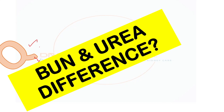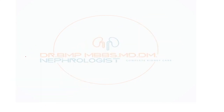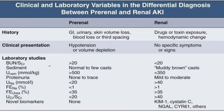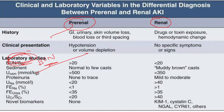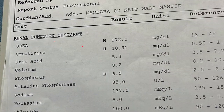This video is about the difference between BUN and urea. There was an intern preparing for the PG entrance examination who studied the previous day about pre-renal and renal AKI, where he saw some points given regarding the values related to BUN — blood urea nitrogen. The next day he came to the ward and saw a patient report which mentioned urea, not BUN.